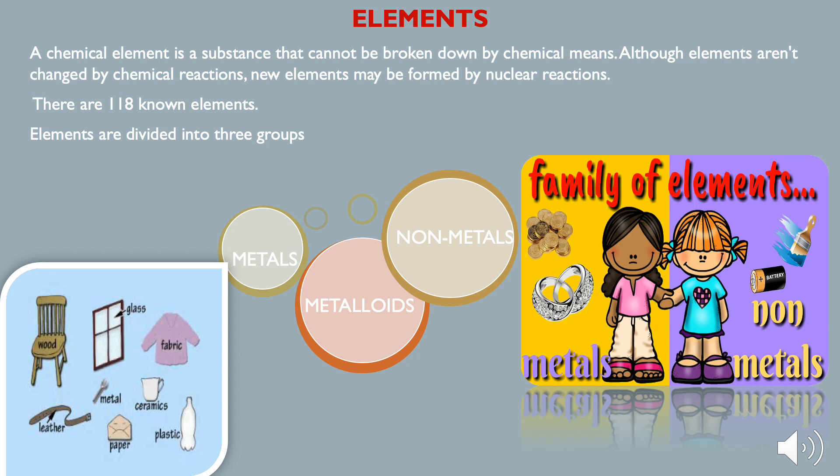These elements are divided into 3 groups: metals, non-metals, and metalloids. Metalloids are elements which possess characteristics of both metals and non-metals. Examples are gallium, silicon, arsenic, and many others.